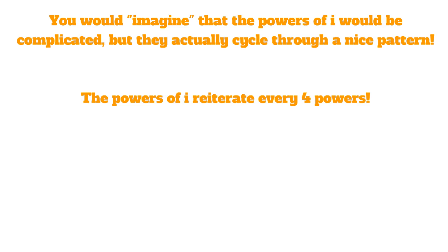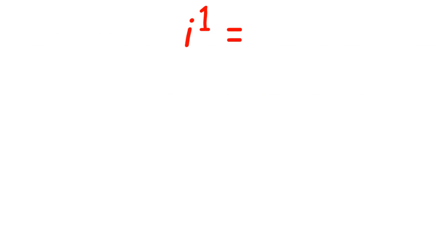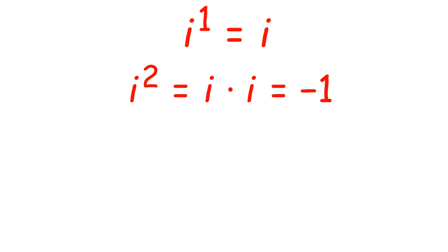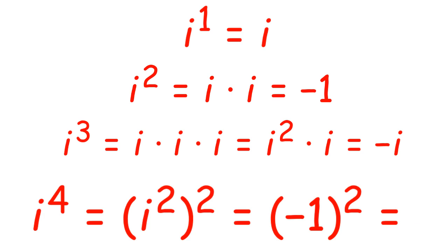You would imagine that the powers of i would be complicated, but they actually cycle through a nice pattern. The powers of i reiterate every four powers. Let's take a look at these four powers. i to the power of 1 is simply equal to i. i squared is equal to i times i, which is equal to negative 1 because i is the square root of negative 1. i cubed is equal to i squared times i, which is negative 1 times i, so we have negative i. And i to the power of 4 is equal to i squared squared, which is negative 1 squared, so our answer is 1.